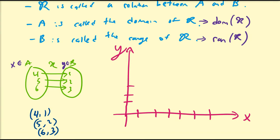So these three values are in R. So 4, 1 is going to be here, 5, 2 is going to be here, and 6, 3 is going to be here. So this is the graph of the relation R.